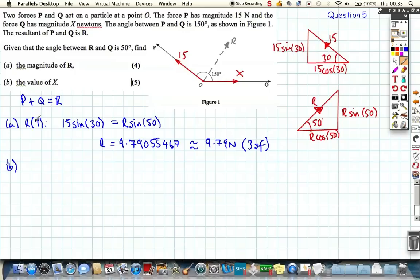Well, if I resolve vertically for part A, presumably for part B, I'm going to have to resolve horizontally. So let's look at the value of X. So this time we're going to resolve horizontally. If we resolve to the right as positive, we know that X is acting to the right. What's acting to the left is the horizontal component here of this force 15, the P force, which is 15 cos 30.